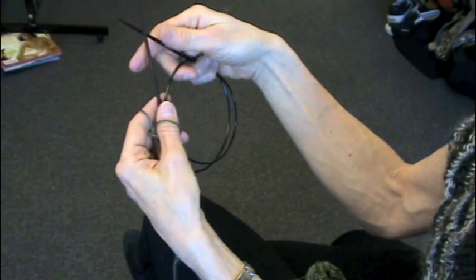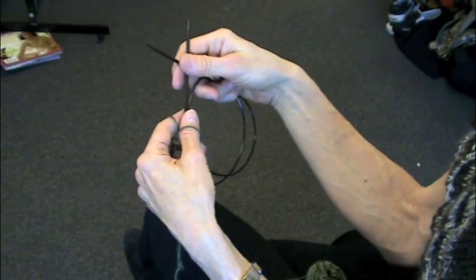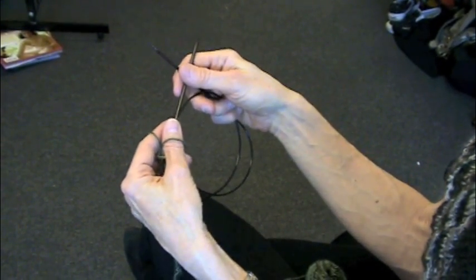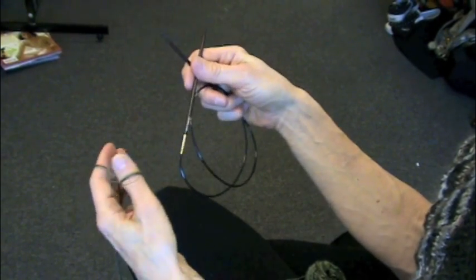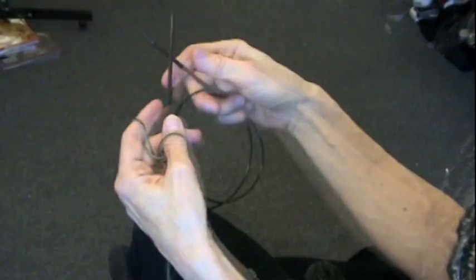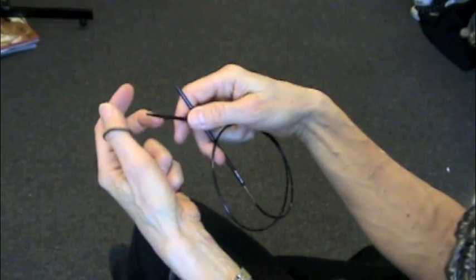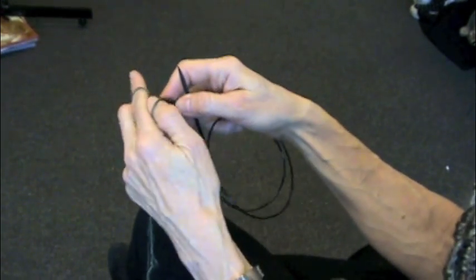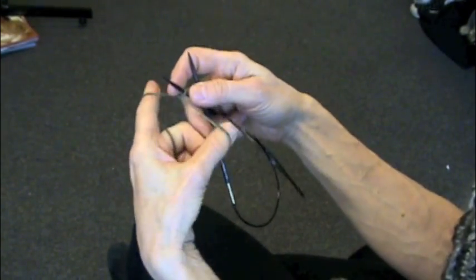You're going to be using a traditional long-tail cast-on, the same cast-on that you probably use when you do your ordinary knitting. The first stitch, I like to do just a regular stitch just like this.